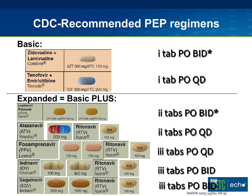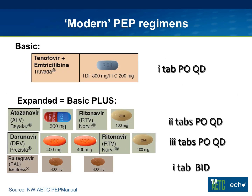Let's get into the actual antiretrovirals we choose. These are the ones recommended in the CDC document, and you can see a lot of these regimens are kind of outdated. The document divides things into basic regimens containing two active agents — Combivir with zidovudine/lamivudine, or Truvada with tenofovir/emtricitabine — and an expanded regimen would add a third active drug, all being protease inhibitors. The pill burdens really get quite high: with indinavir or saquinavir you're looking at six tablets just for the protease inhibitor itself, plus whatever you started with.